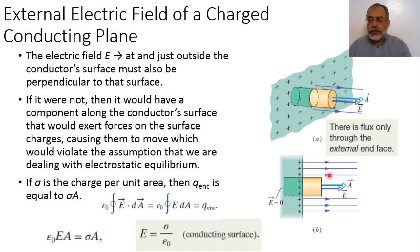This Gaussian surface has three faces: face number one, face number two, and face number three. The normal to face number one is the direction a1, which is also perpendicular to the surface of the conductor. This means that the normal of face one is parallel to the proposed direction of the electric field, which is normal to the surface.